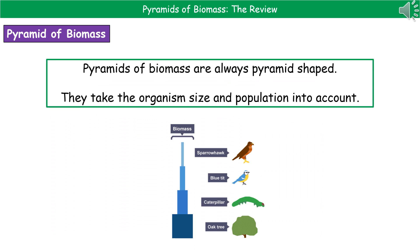The Pyramid of Biomass is always pyramid shaped, because what it's doing is taking into consideration not only the number of organisms, but also the organism's size. Biomass is the amount of living material, and therefore a Pyramid of Biomass looks at the amount of living material in each trophic level. So these will always be pyramid shaped.